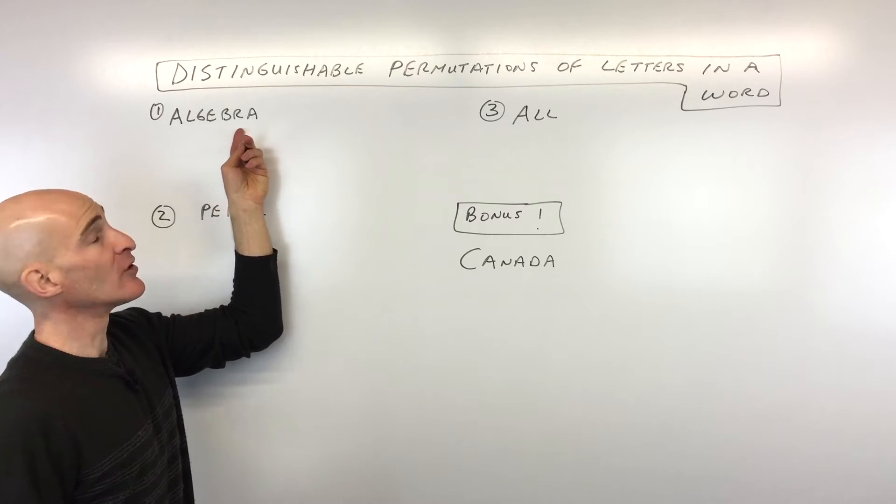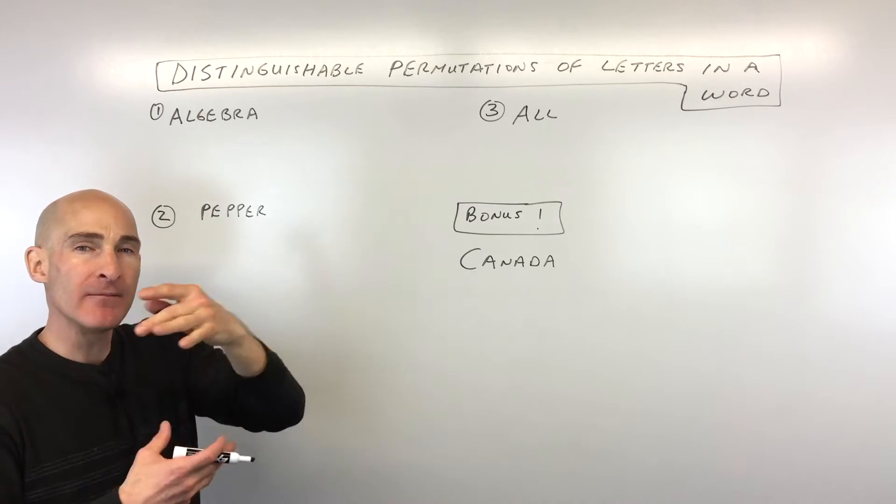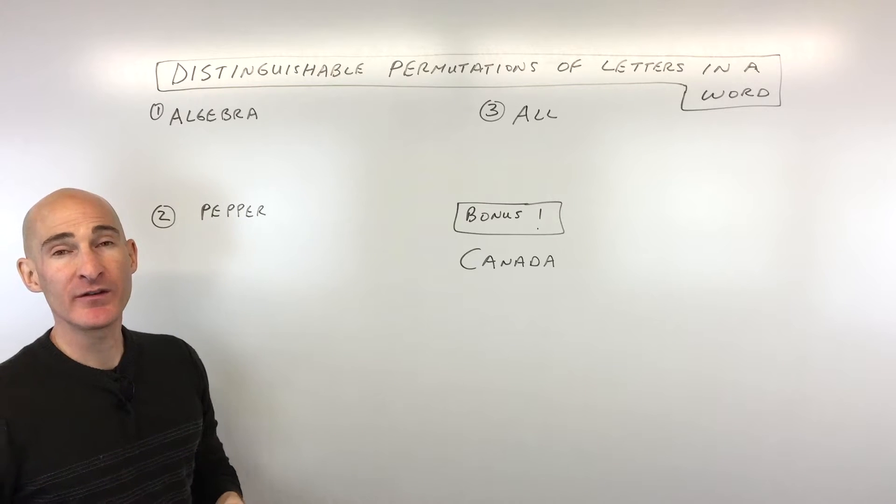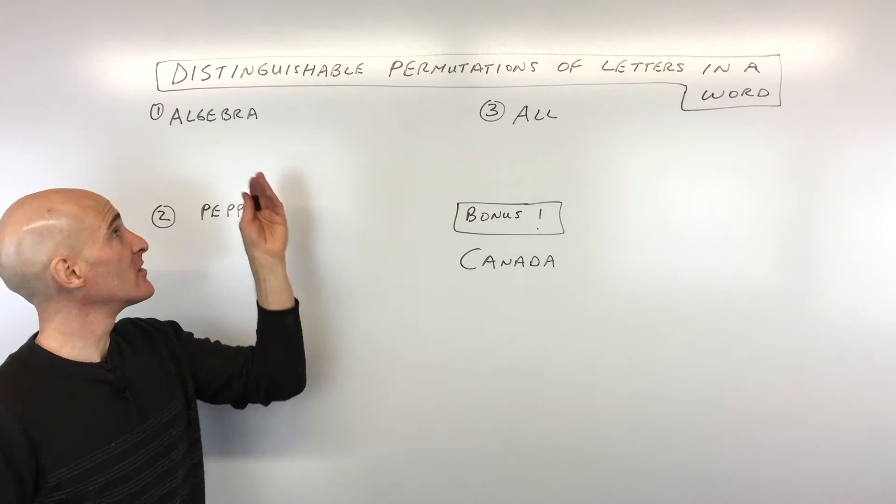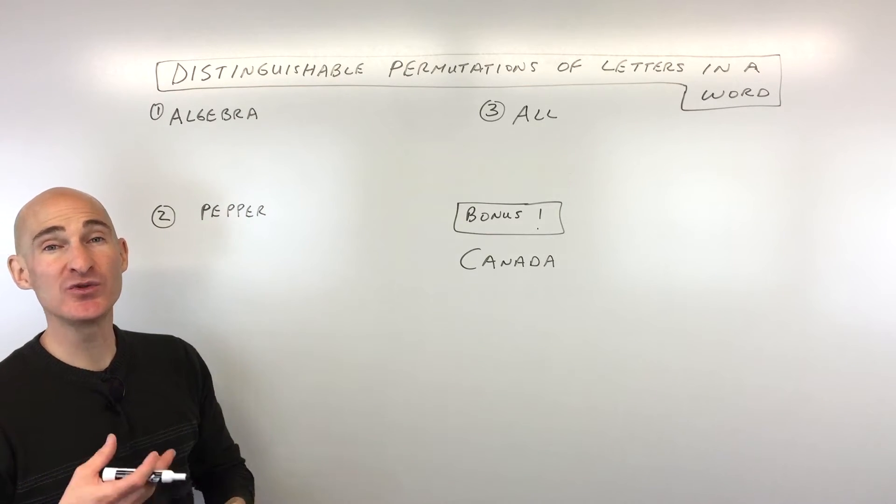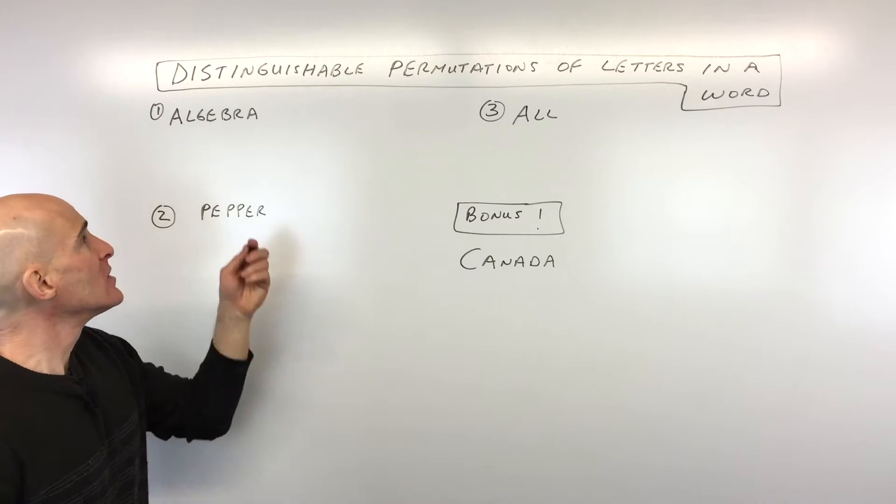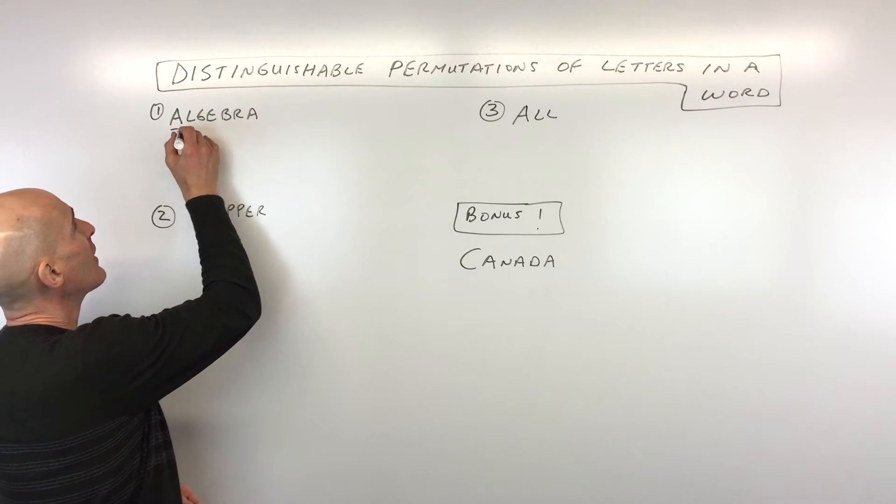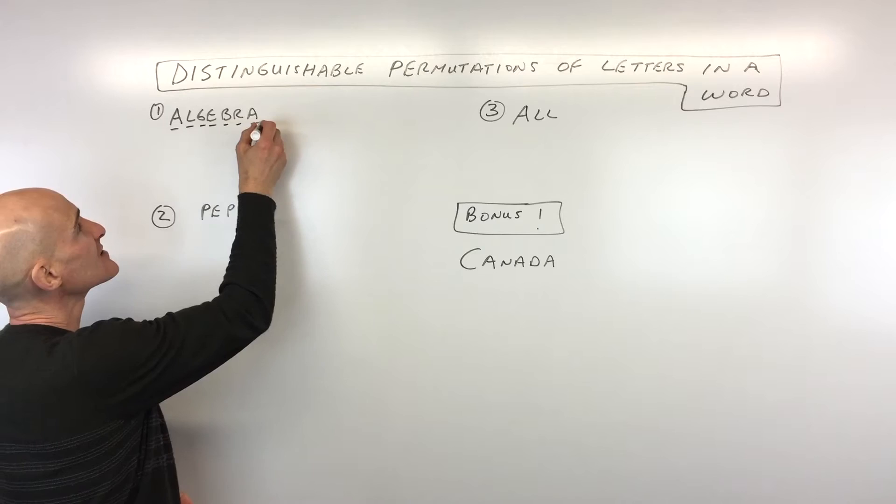If we take all these letters, say for example in the word algebra, and we want to rearrange them in such a way that it forms a different word than algebra, how many ways can we do that using all of the letters? Well, let's first count how many letters we have. We've got one, two, three, four, five, six, seven letters.